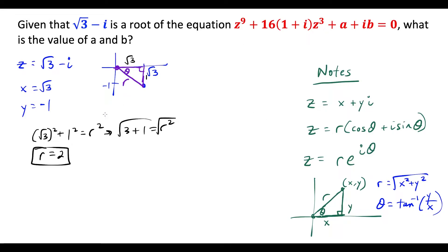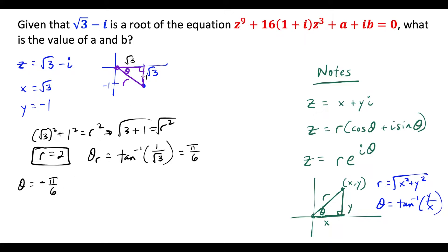Next we solve for theta. I'll solve for the reference angle first, treating this as a right triangle in space. The reference angle is tangent inverse of the opposite side, which is 1, over the adjacent side, which is square root of 3. I'm not including the negative 1 here because I'm solving the reference angle first. Then, since we're going into quadrant 4, theta will be minus that positive acute angle. Tangent inverse of 1 over root 3 works out to pi over 6 radians, so theta equals negative pi over 6.